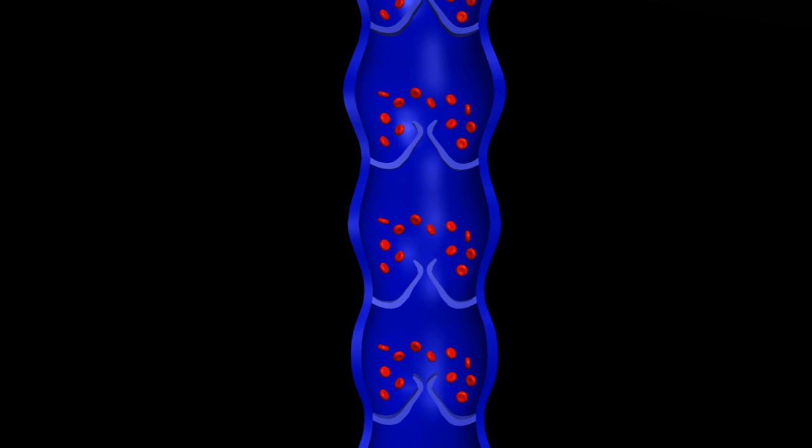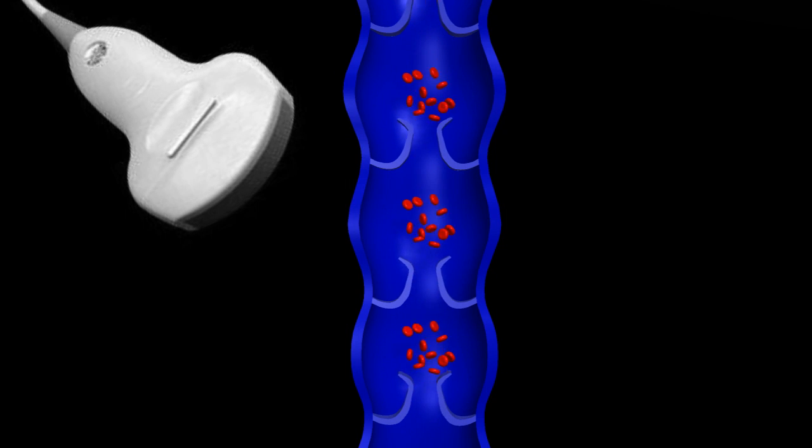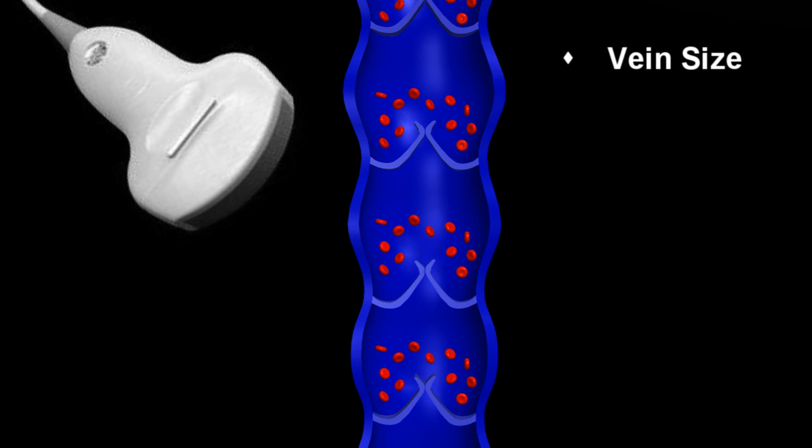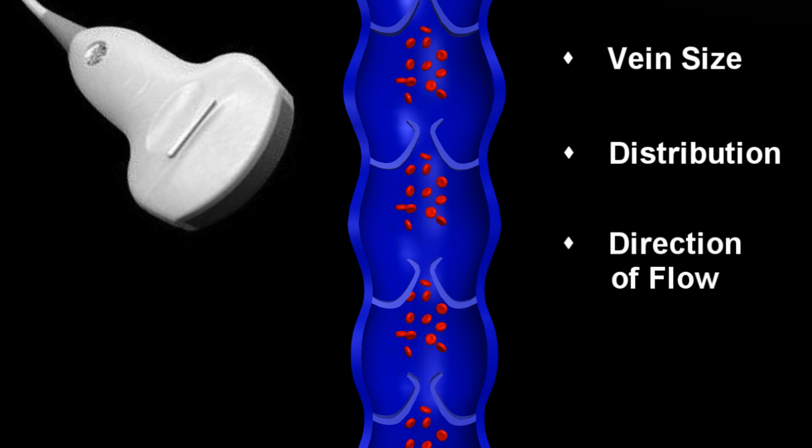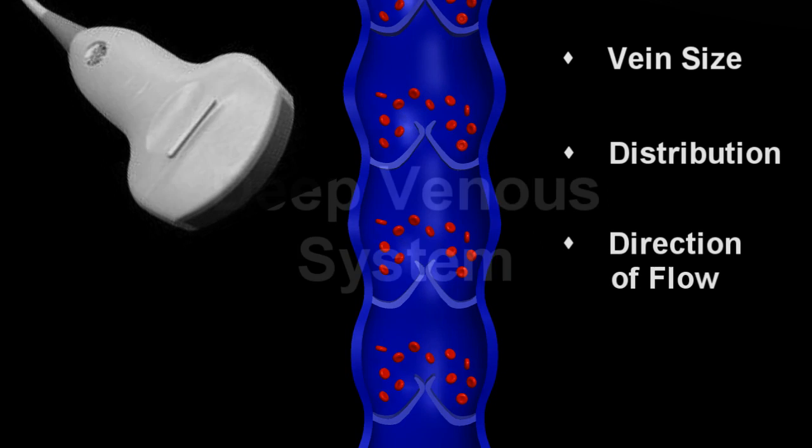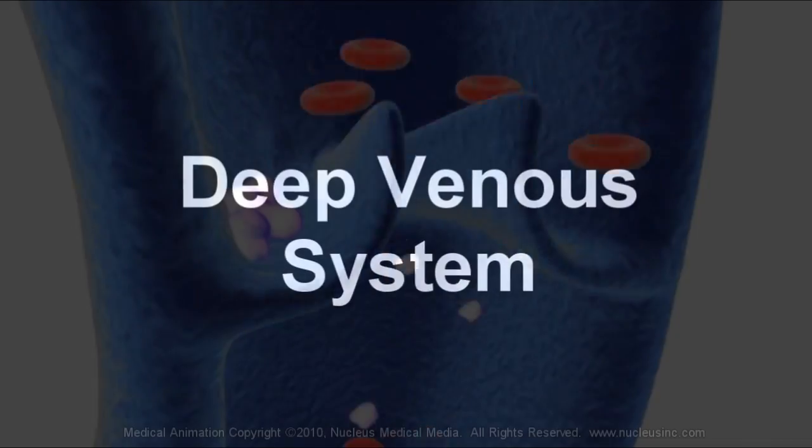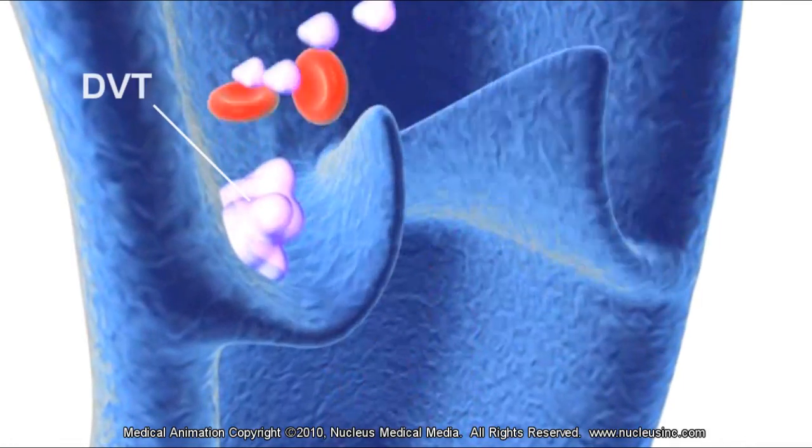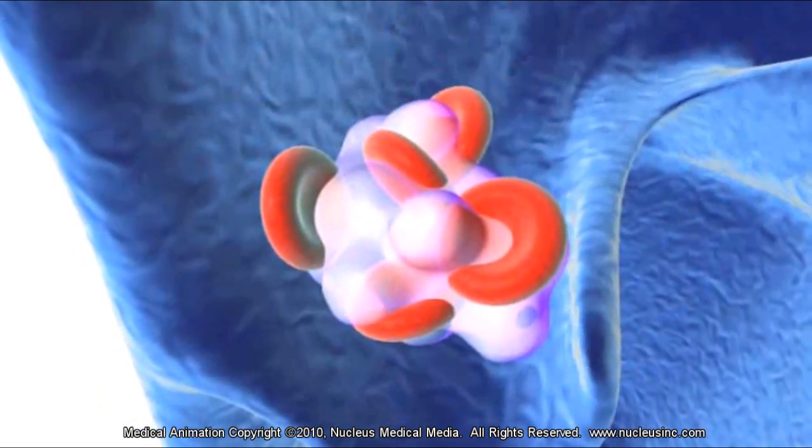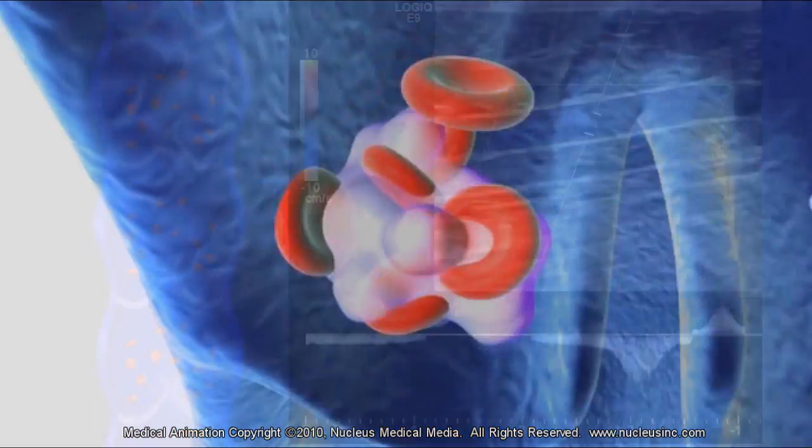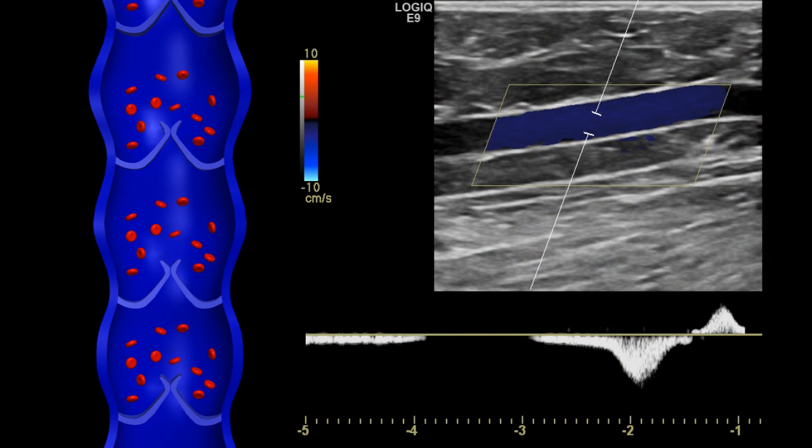The next step is an ultrasound. With the ultrasound, we can identify the size of the leg veins, the distribution of the varicosities, and the direction of blood flow through the vessel. We first evaluate the deep system to ensure there are no deep venous clots. Occlusion of the deep system precludes treatment of the superficial venous system since we need at least one open channel to drain the legs. We then use a Doppler ultrasound to evaluate the direction of flow.